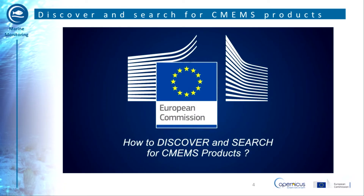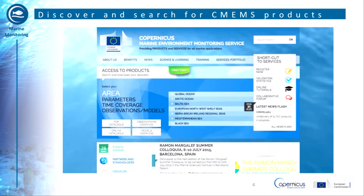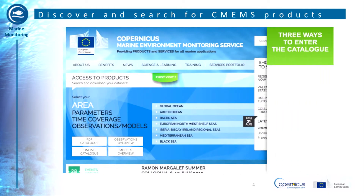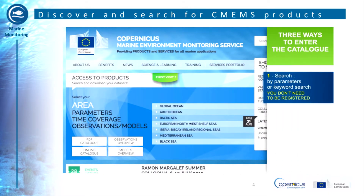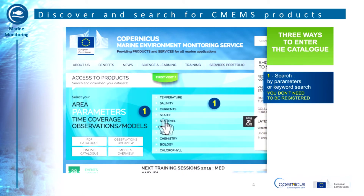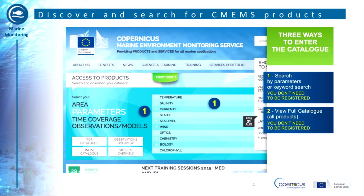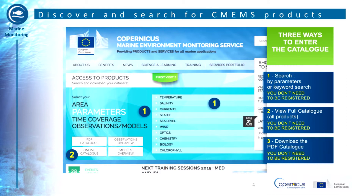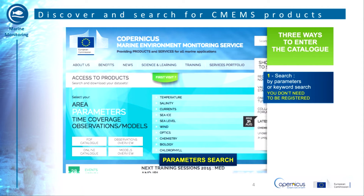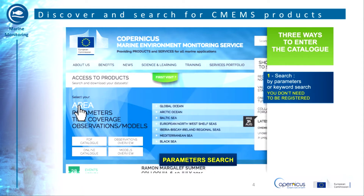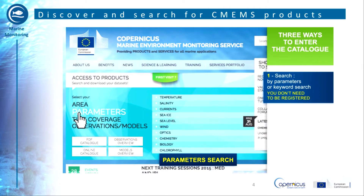Once we are on the C-MEMS website, let's see how to search and browse the catalog. There are three ways to enter the C-MEMS catalog: the first is by parameter or keyword search; the second consists in viewing the full catalog; and the third way is to download the full PDF catalog. In all cases, you do not need to be registered to search and browse.